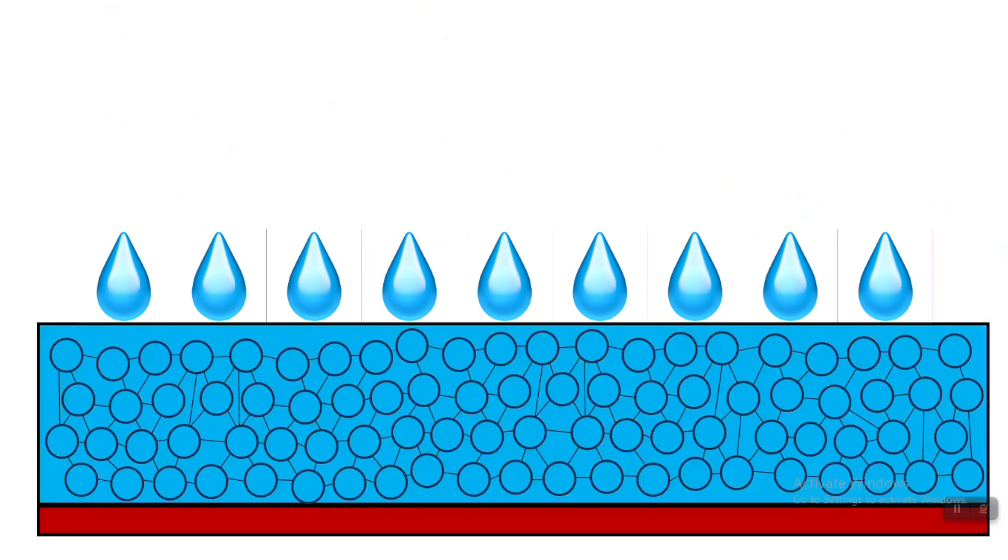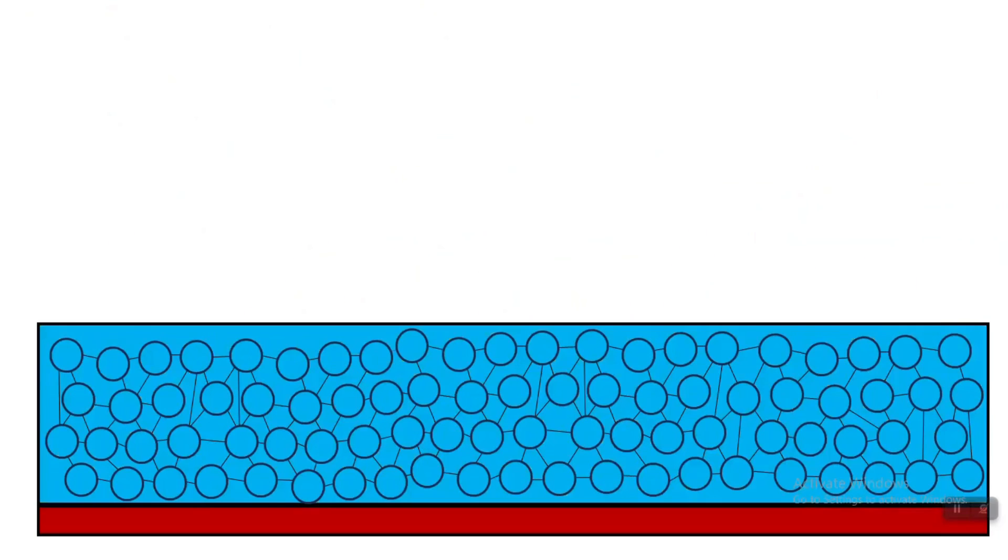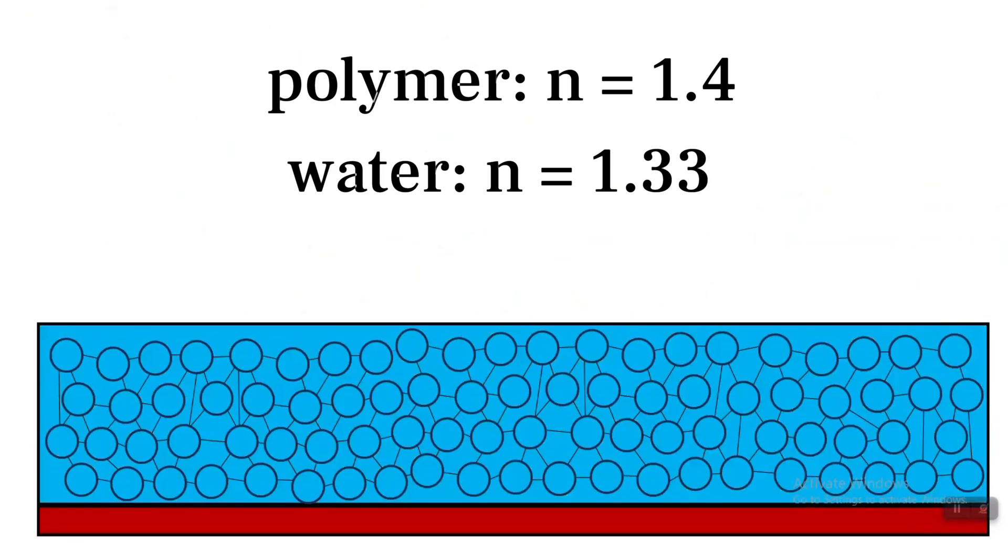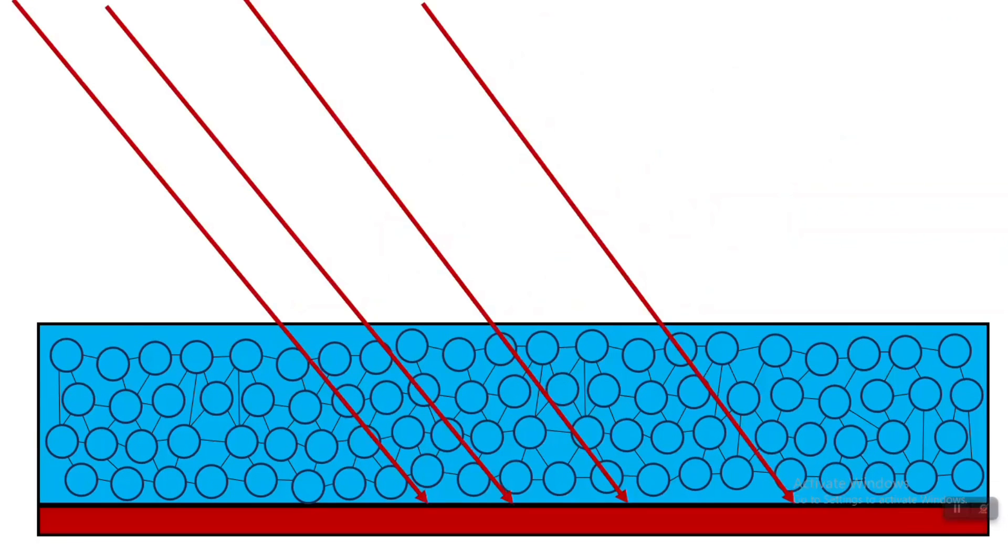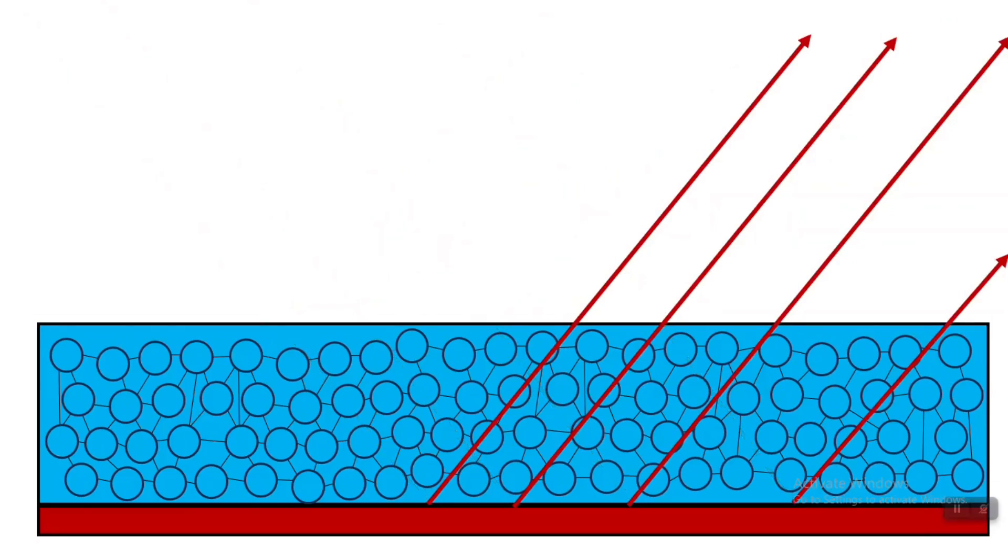However, when water is added to the surface, the pores get filled with water, and this makes both the pores and the polymer itself have very close to the same index of refraction. When this happens, the polymer coating becomes transparent, and this allows the red ink below to be seen.